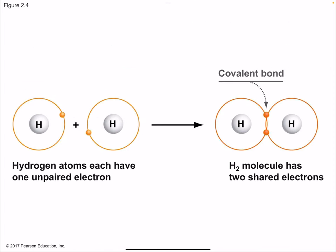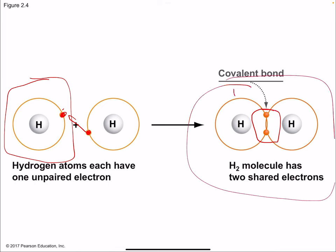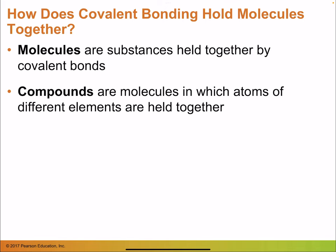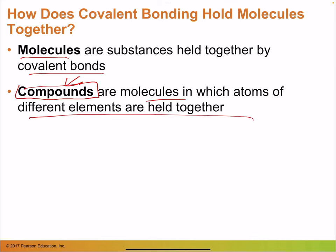Hydrogen doesn't like to be alone with one electron — it will find another hydrogen with the same problem and share electrons, forming a covalent bond. The two hydrogens become H₂. When molecules are held together with covalent bonds they become compounds. A compound forms whenever a molecule joins different elements — H₂O is a compound, NaCl is a compound.